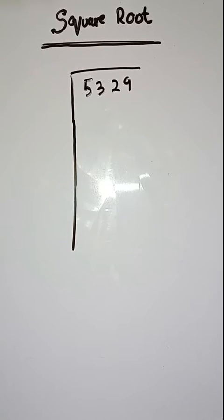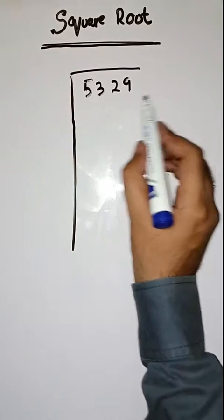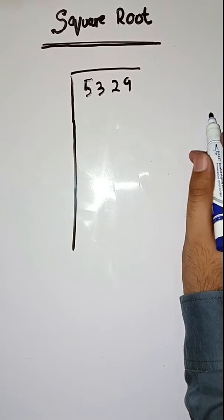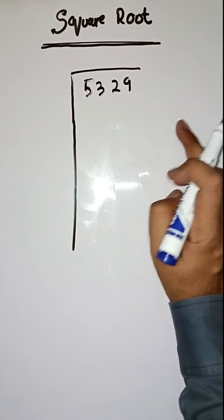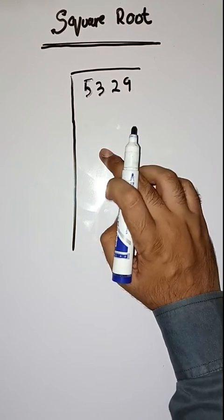We have to find square root of 5329. So, let's start. First step is, we have to make pairs from right to left like this.